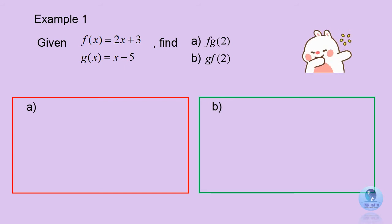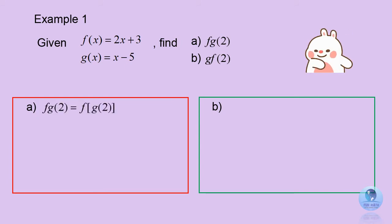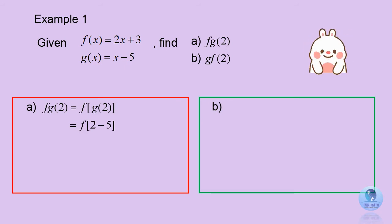Let's look at the first example. You are given two functions: f of x equals 2x plus 3, and g of x equals x minus 5. Question A: find f of g of 2. You must understand the sequence in composite functions — start with the rightmost one and work towards the left. In this case, you must first solve g of 2. Substitute 2 into g of x and you get negative 3. Then substitute negative 3 into f of x and you get the answer negative 3.